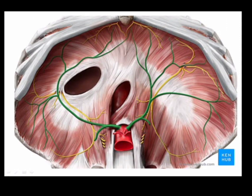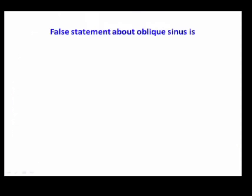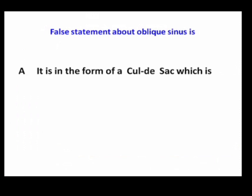Coming to choice B — superior phrenic artery supplies the under surface of the diaphragm. The diaphragm is supplied by superior and inferior phrenic arteries. Superior phrenic arteries arise from the descending thoracic aorta and supply the superior surface of the diaphragm, whereas the inferior surface is supplied by paired inferior phrenic arteries arising from the abdominal aorta. So choice B is the wrong option.